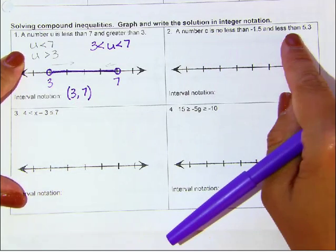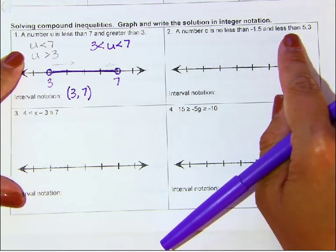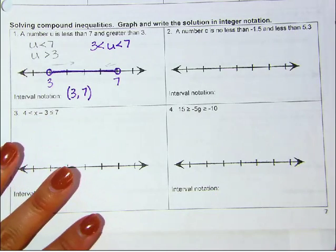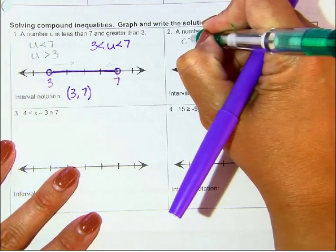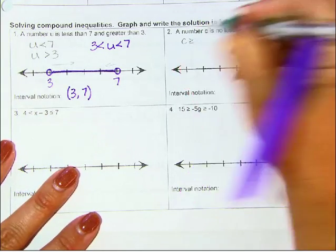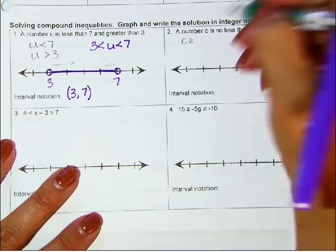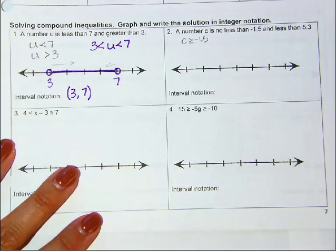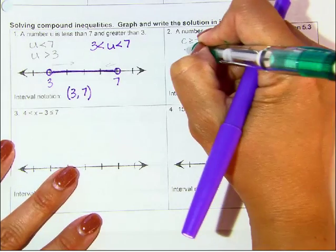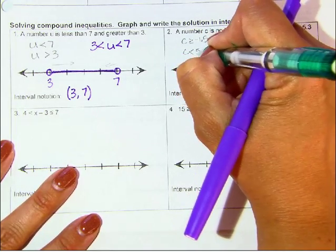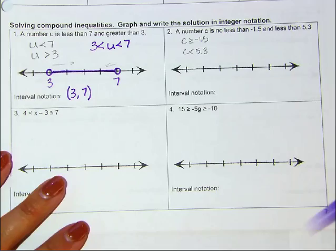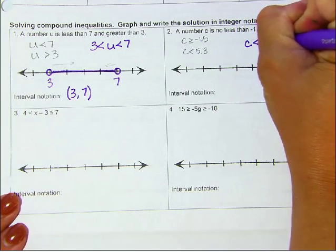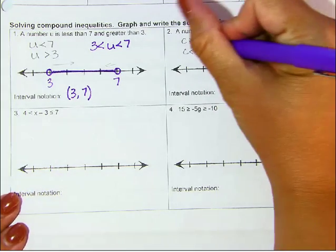Now if I write the one over here — a number C is no less than, so that means it can't be less than, so it's going to be greater than but could equal it — negative 1.5. But then it says C is less than 5.3. So I'm going to leave C is less than 5.3, and flip this other one, so it'll be less than or equal to negative 1.5.